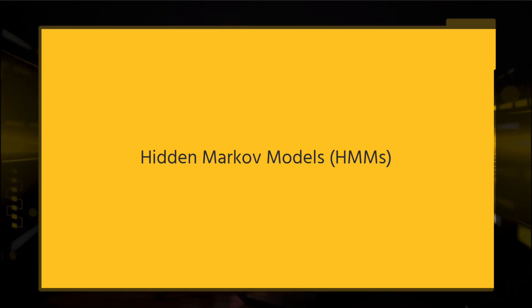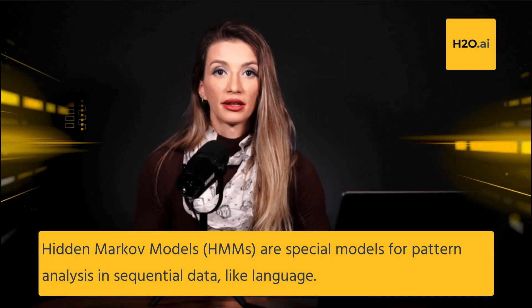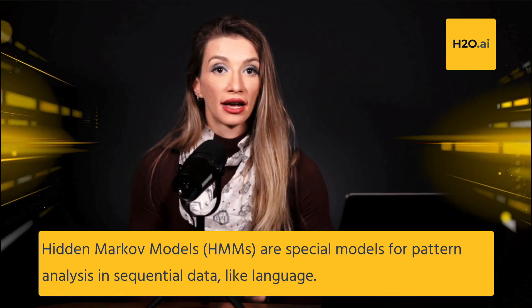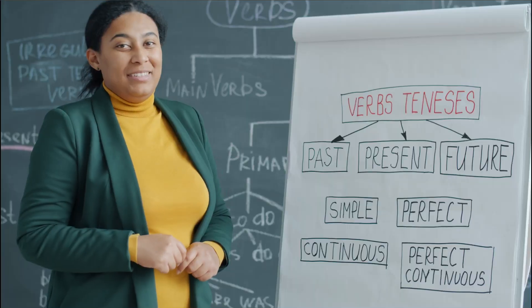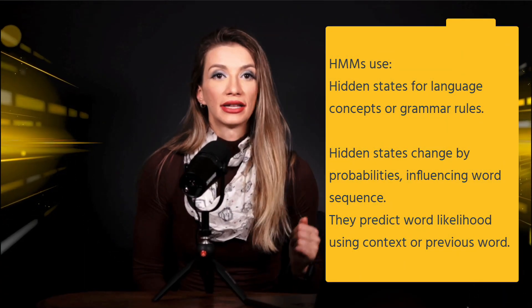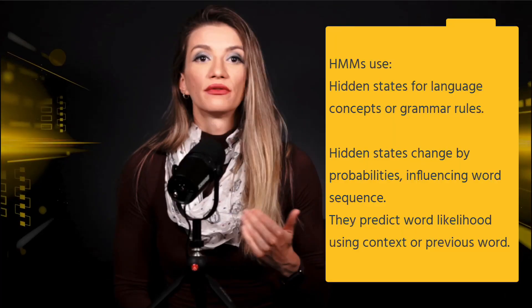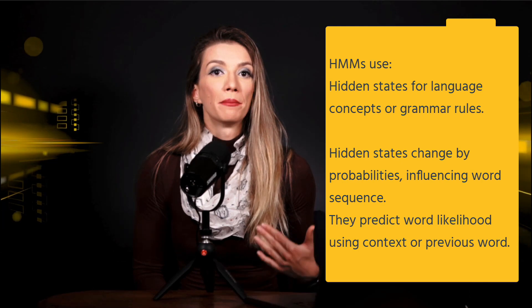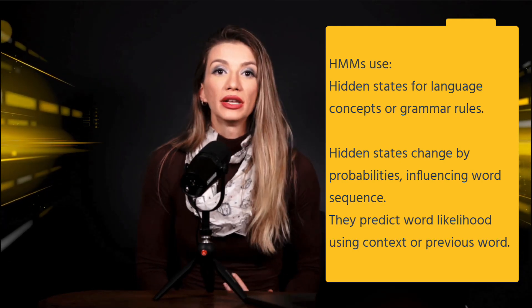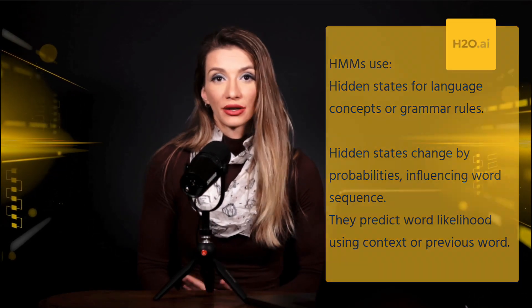Hidden Markov Models (HMMs) are special models that help us understand the patterns in sequential data, like language. In language modeling, HMMs use hidden states to represent different language ideas or grammar rules. These hidden states change based on probabilities, guiding how words follow each other. HMM-based language models can predict the probability of a word based on the previous word or the context around it.